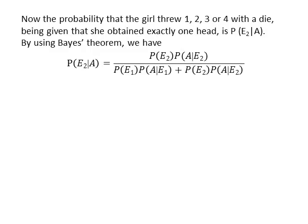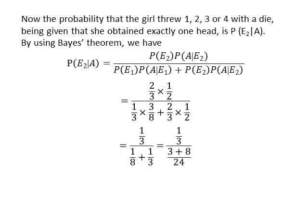Now, the probability that the girl threw 1, 2, 3 or 4 with the die, given that she obtained exactly 1 head, is P(E2|A). By using Bayes' theorem, P(E2|A) equals PE2 multiplied by P(A|E2) divided by PE1 multiplied by P(A|E1) plus PE2 multiplied by P(A|E2). Substituting the values and simplifying, we get P(E2|A) equals 8/11.